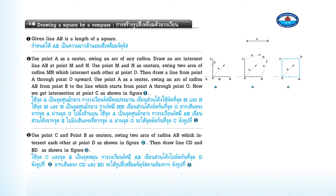Use point A as a center. Swing an arc of radius AB from point B to the line which starts from point A through point O. Now we get an intersection at point C as shown in Figure 1.